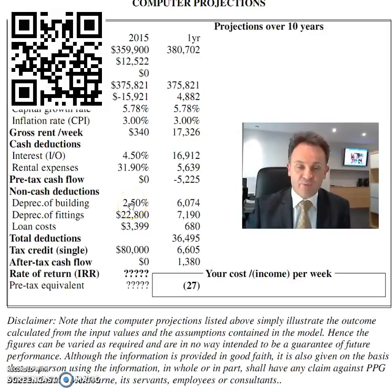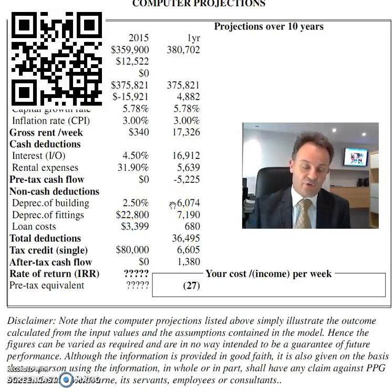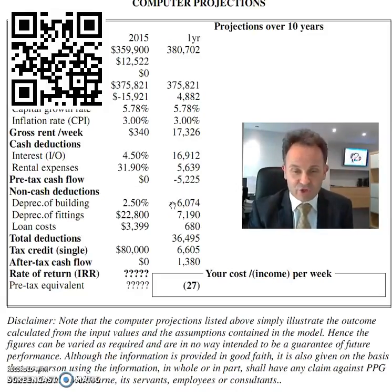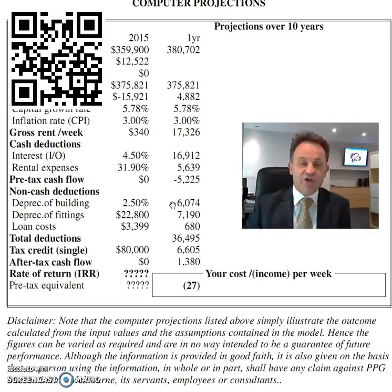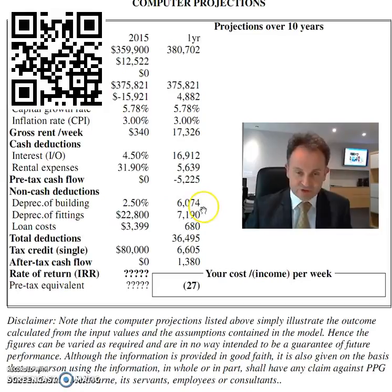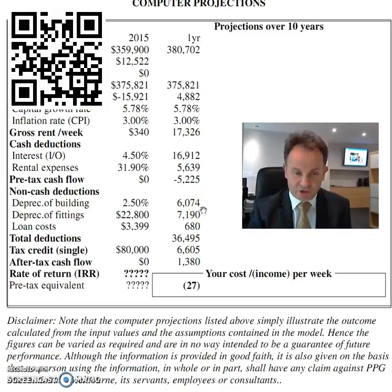Now we're going to depreciate the building at 2.5%, and in the first year alone — for 40 years — you should be able to claim $6,074. Then you've got depreciation on your fittings and fixtures; in the first year, going by the tax depreciation schedule, you should be able to claim $7,190.